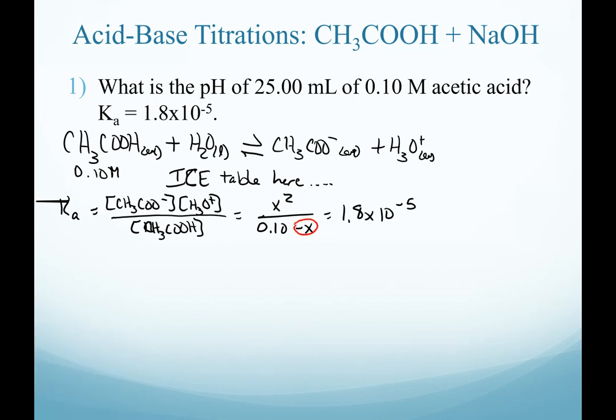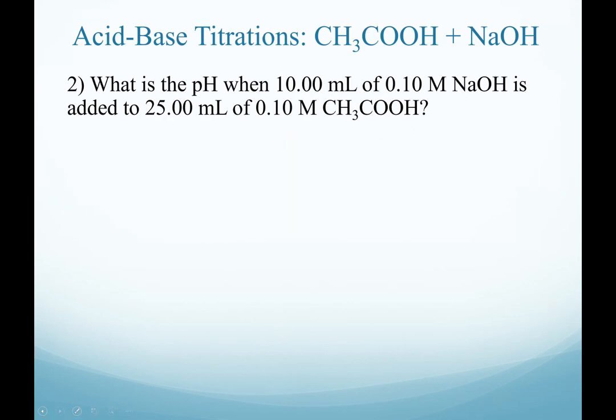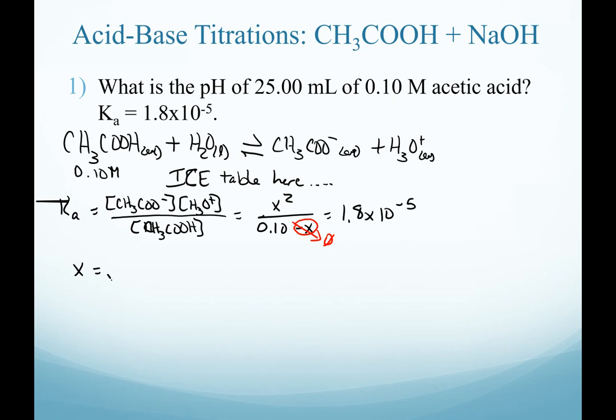Because we have a small k value, the easiest way to solve it is to assume our bottom x is 0. Our solution for x, then, is the square root of our Ka value times our initial acid concentration.